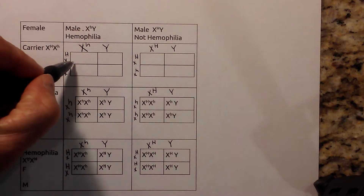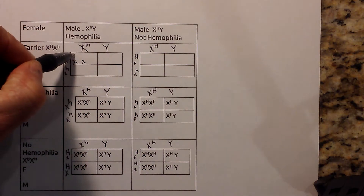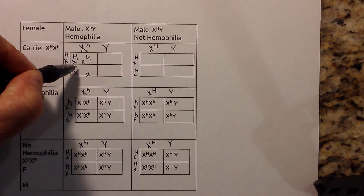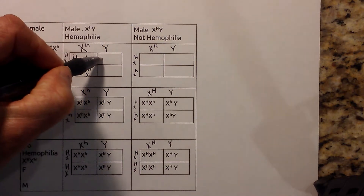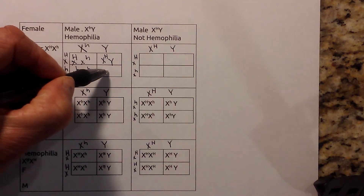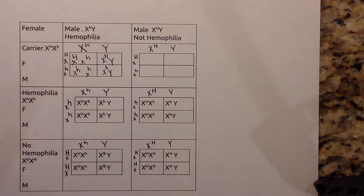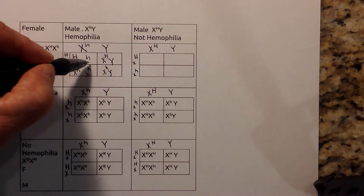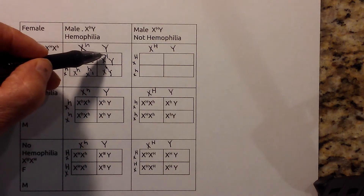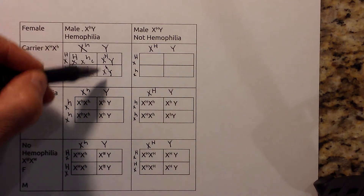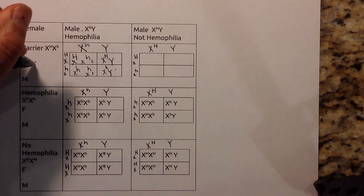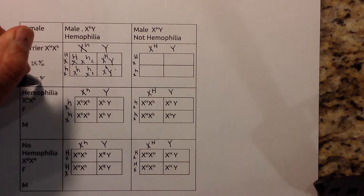Let me go ahead and fill this in. We have X with capital H and lowercase h for the carrier mother, giving XX capital-lowercase and XX lowercase-lowercase for the female offspring, and XY capital and XY lowercase for the males. In this case, this female will be a carrier, this female will have the disease, this male does not have the disease, and this male has hemophilia because he has a lowercase h. So both males and females have a 25% chance of having the disease.